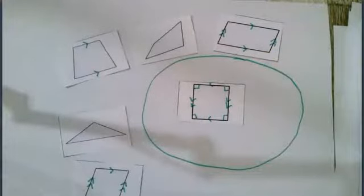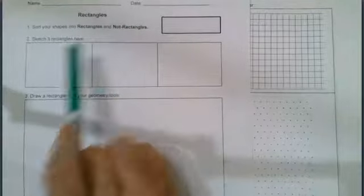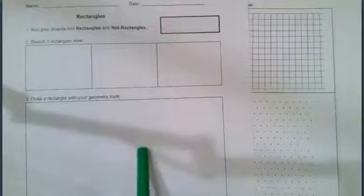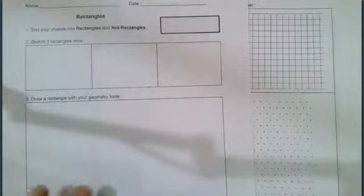That's going to be your work today. You're going to get out your rectangle sorting sheet and you will sort your shapes into rectangles and not rectangles. Sketch three of those rectangles here and then draw a rectangle with your right angle template.